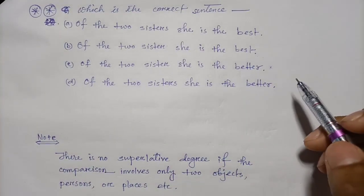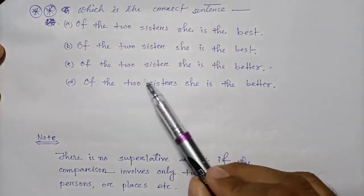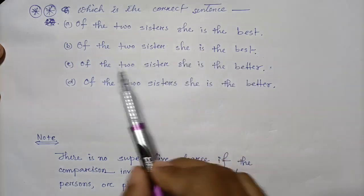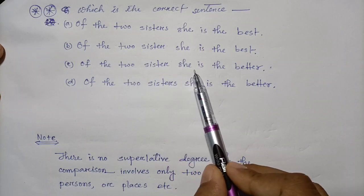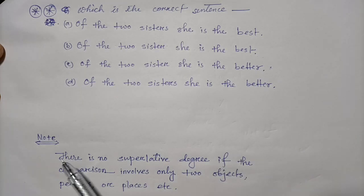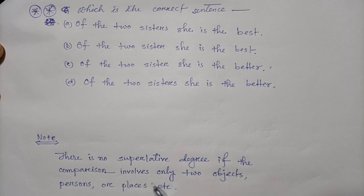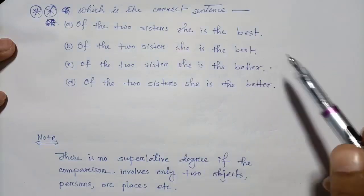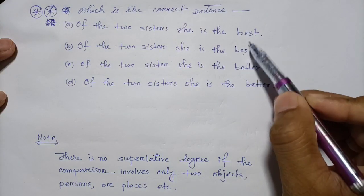Now returning to the opening question: 'Of the two sisters, she is the better.' There is no superlative degree when the comparison involves only two objects, persons, or places. So when only two sisters are compared, we cannot use 'best' — we must use 'better.'